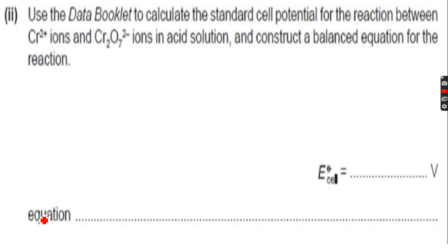Use the data booklet to calculate the standard cell potential for the reaction between Cr²⁺ ions and Cr₂O₇²⁻ ions in acid solution and construct a balanced equation for the reaction. In my data booklet when I look at Cr₂O₇²⁻ ions, I get this in acid solution.